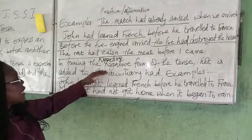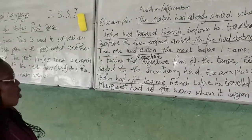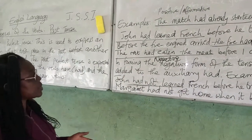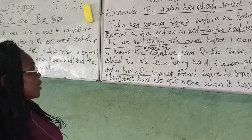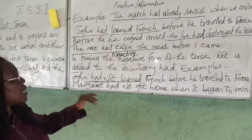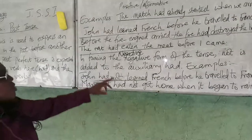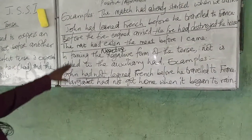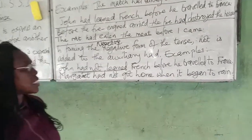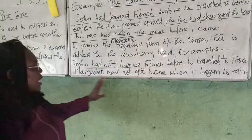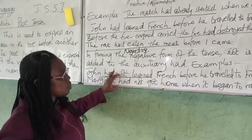Now when we look at the negative form — remember, negative is used to show the opposite of positive. In normal language we use 'no,' 'not,' 'nothing' to show negative. In this case we are using 'not,' so forming the negative, 'not' is added to the auxiliary 'had.' I now have: 'John had not learned French before he traveled to France' and 'Margaret had not got to when it began to rain.'